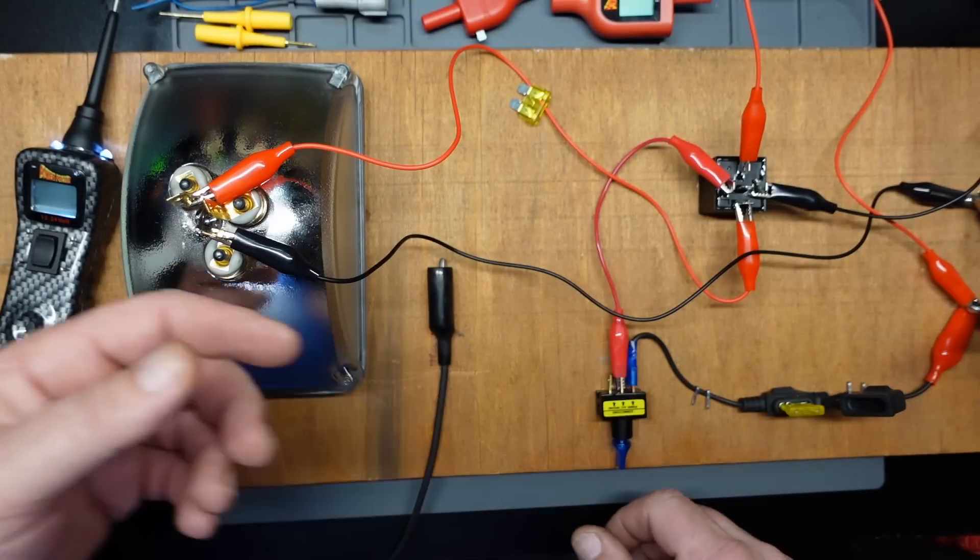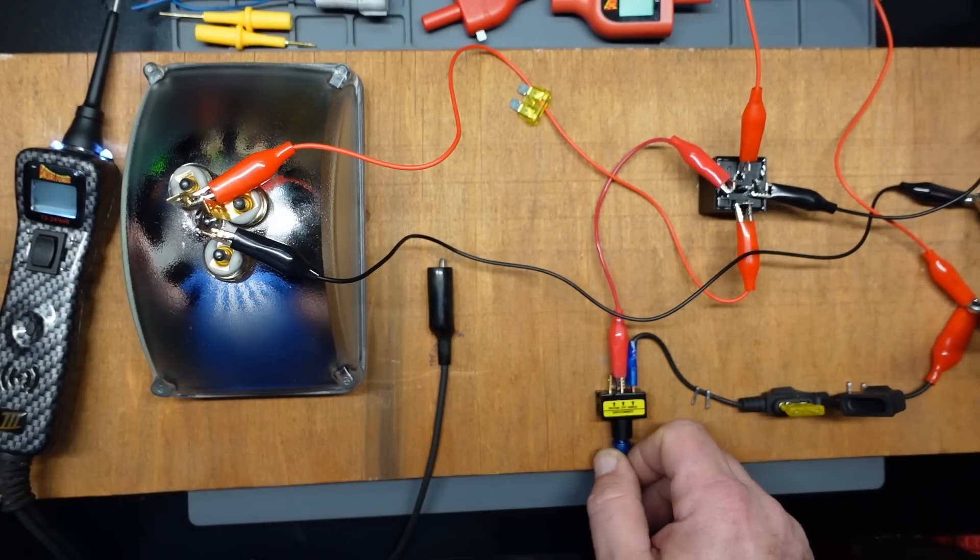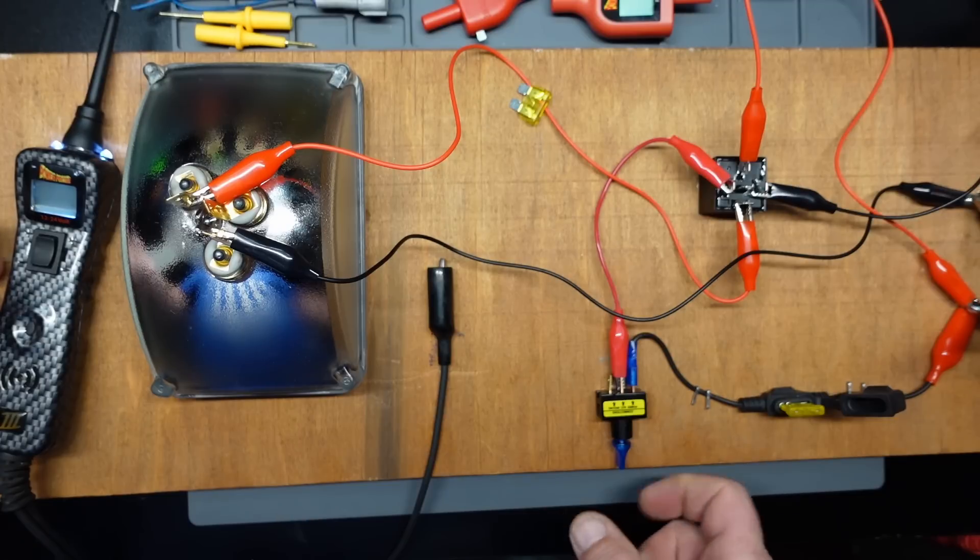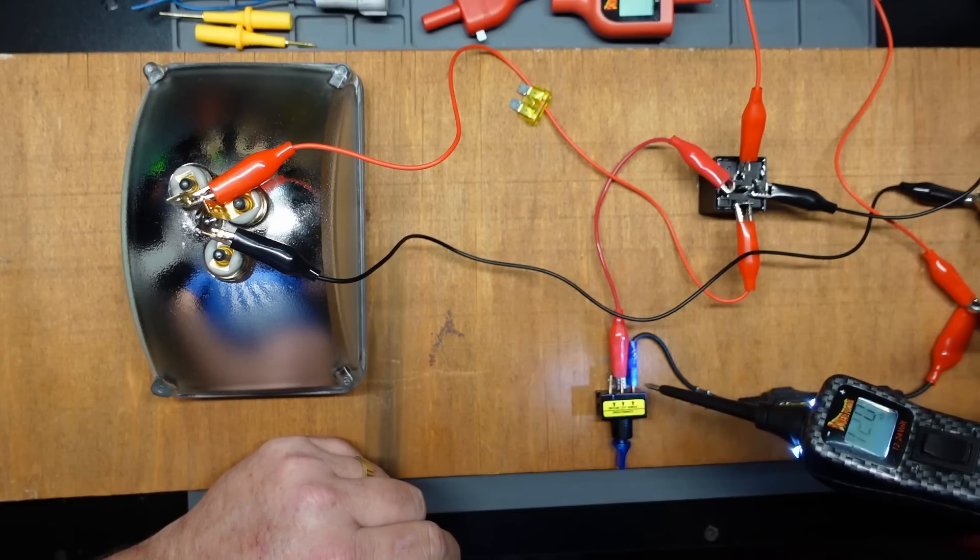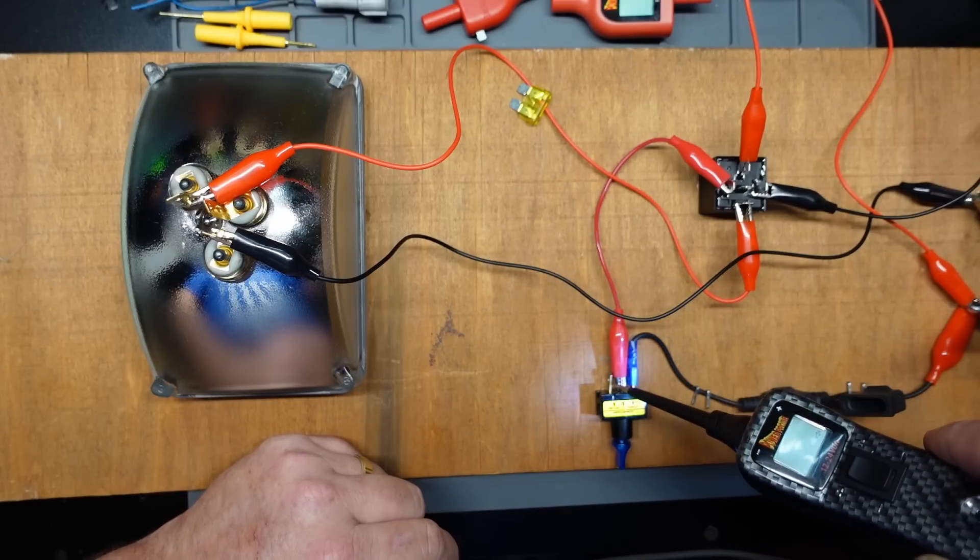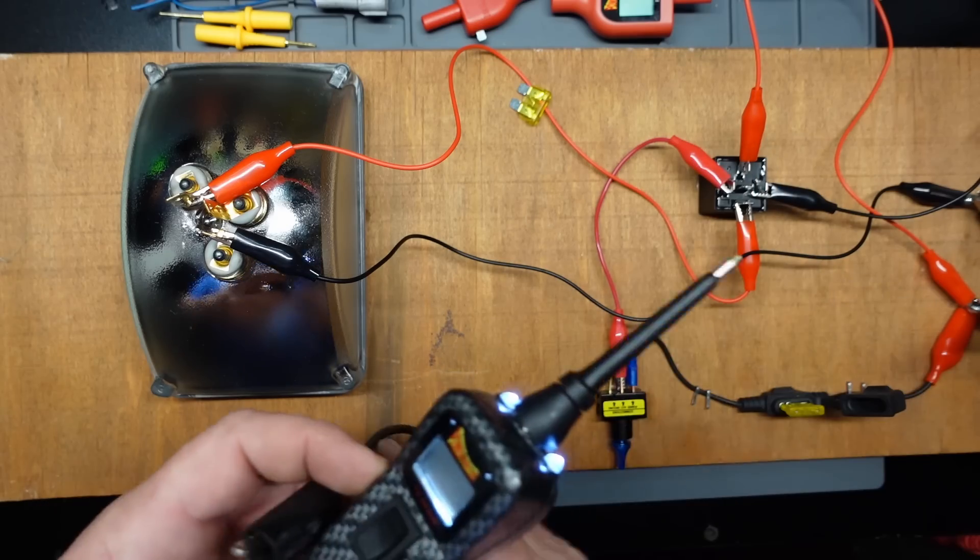All right, now, so, we replaced the fuse. And, we still got no lights. So, turn the switch on there. Check the power to the switch. Good. Check the power coming out of the switch. Good. Check the power to the relay. Now, the relay, let me bring this over here.